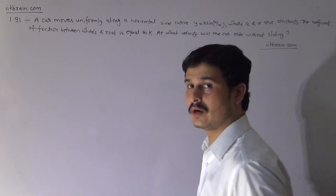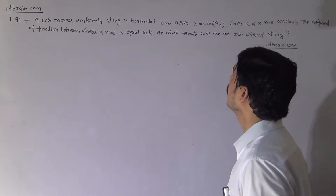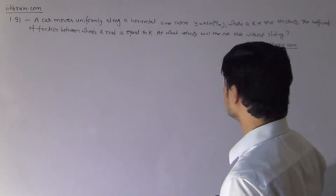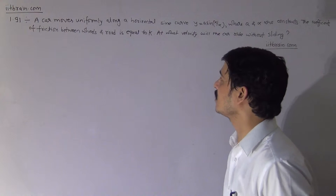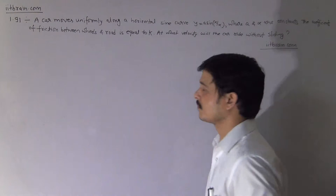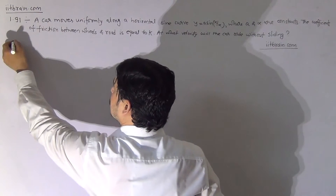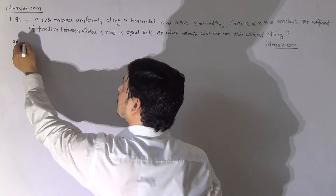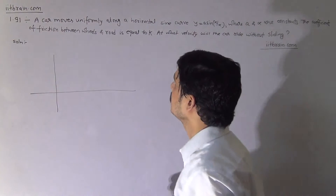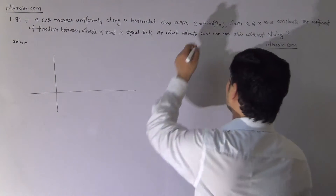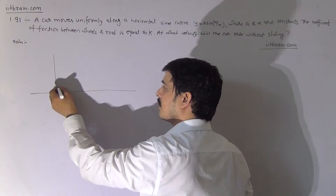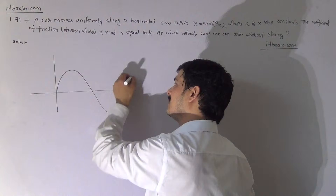Hello students, this is problem 1.91. A car moves uniformly along a horizontal sine curve y = a·sin(x/α), where a and α are constants. The coefficient of friction between wheels and road is equal to K. At what velocity will the car ride without sliding? First, let's understand the path of motion. This is a Cartesian plane and the curve in which the car is moving is y = a·sin(x/α), so the path curve will look like a sine wave.